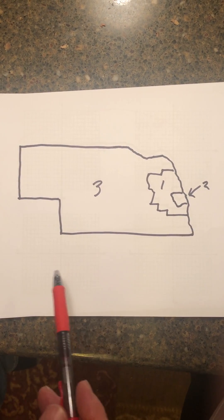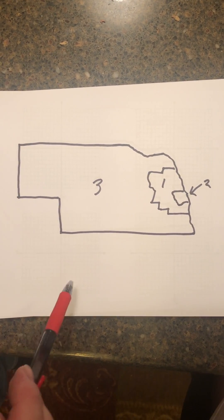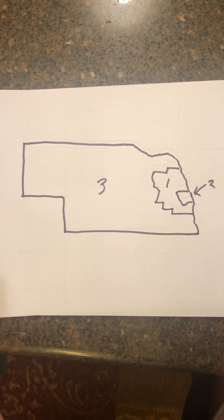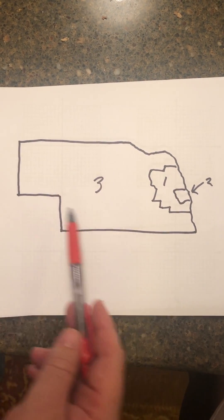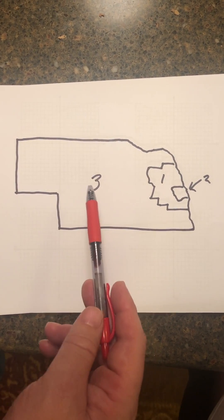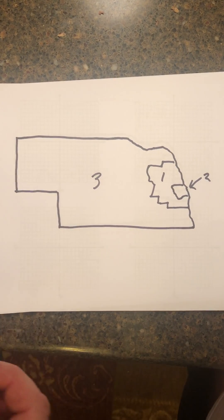Now Maine and Nebraska are very unusual states because they count their electoral votes differently than everybody else. 48 states out of the 50 have what's called winner-take-all, where whoever wins the popular vote in the state wins all of the electoral votes, except in Maine and Nebraska.